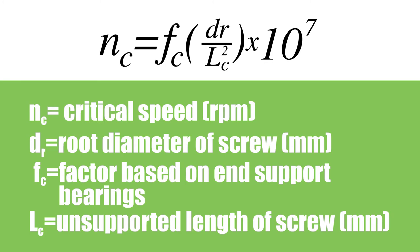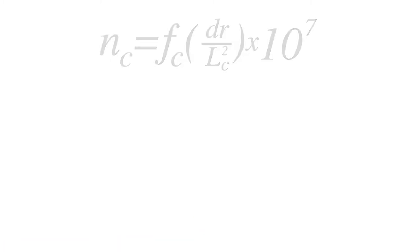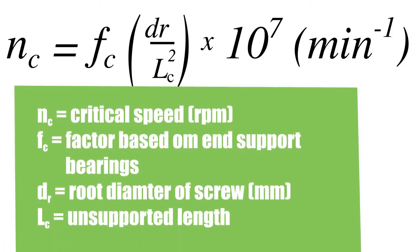The critical speed of a ball screw or lead screw depends on the screw's diameter and length as well as the type of end bearings that support the screw shaft. Although the screw length is typically dictated by the application, critical speed can be increased by choosing a more rigid end bearing arrangement, which increases the end bearing factor, or by using a larger diameter screw.